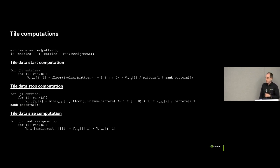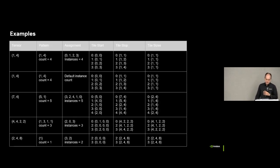What I have here is the formulas to do the start, stop, and size computations. I'm not going to go into this as this is fairly complicated, but I want to put it up here if people want to go look at it later. Instead, I'm going to go through some simple examples. The first two are sort of the identity example. They should be fairly self-explanatory. But I want to go through in detail the third example.